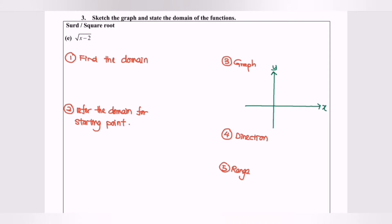Hello everyone. In this video I'm going to discuss how to sketch the graph and state the domain of a function. The given function is a square root function, f(x) = √(x − 2). We are going to discuss how to sketch the graph, starting with step one: find the domain.